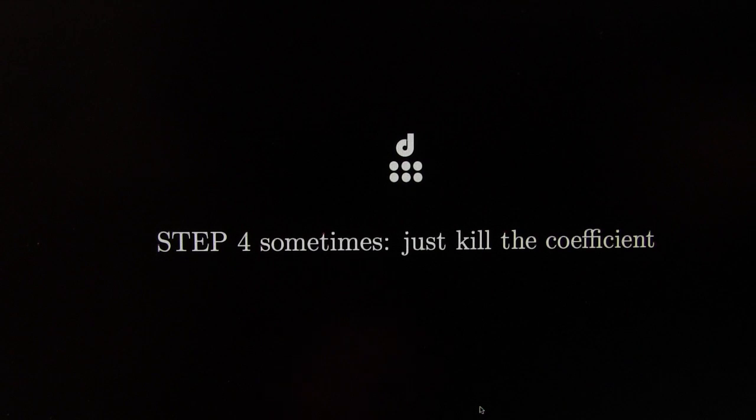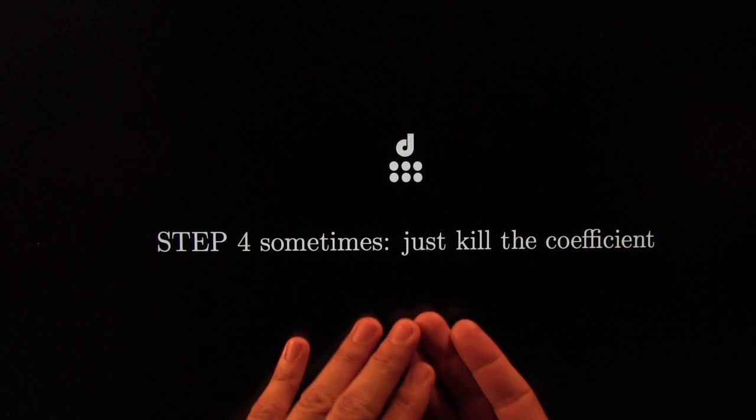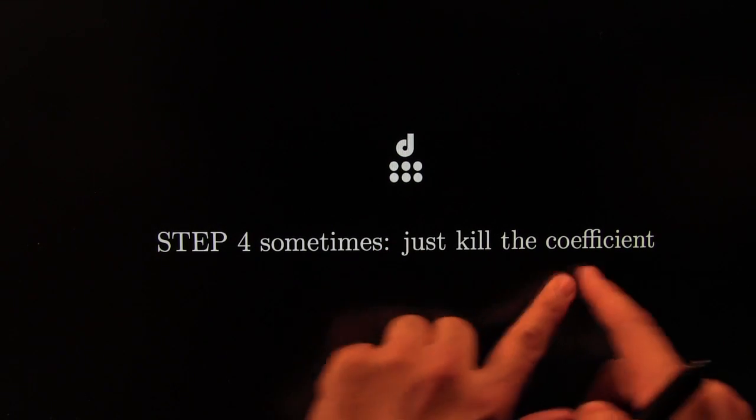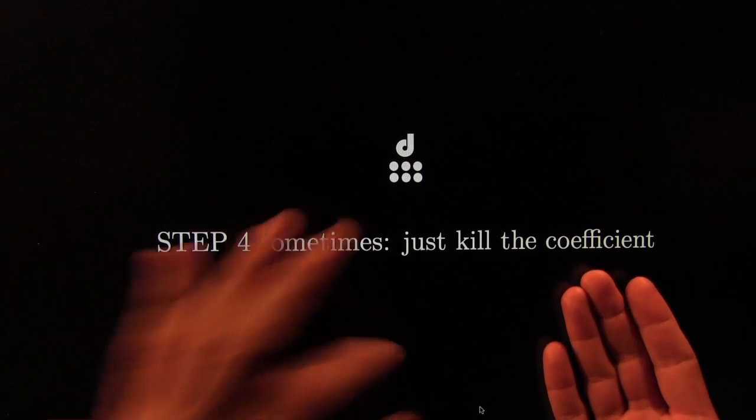So we start with step 4 first. Step 4 is called kill the coefficient. Sometimes it's enough to just kill the coefficient. Let's elaborate on that.